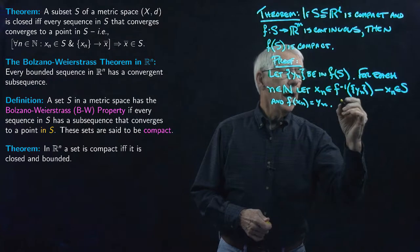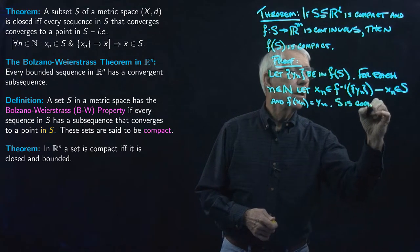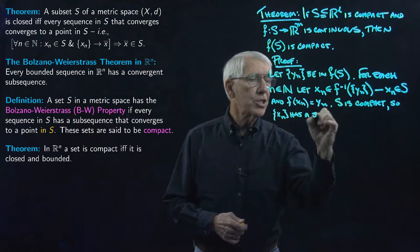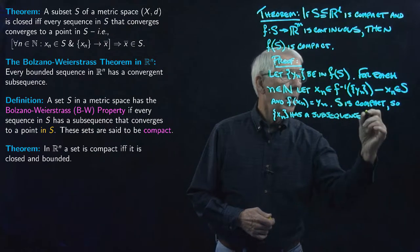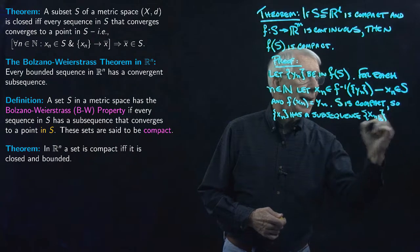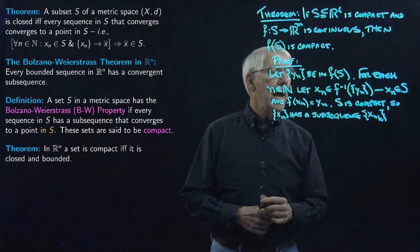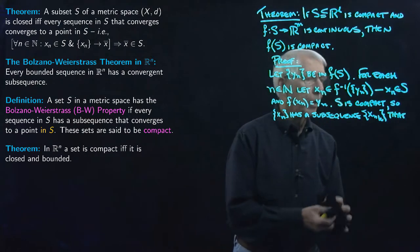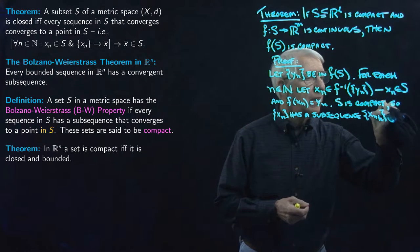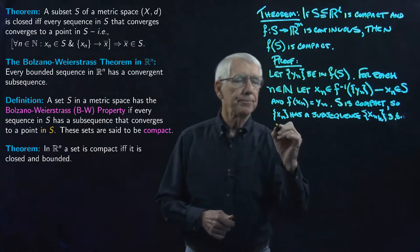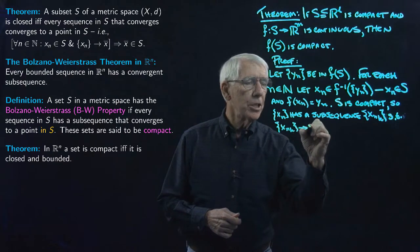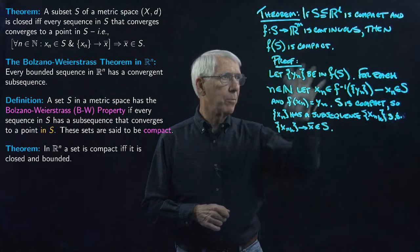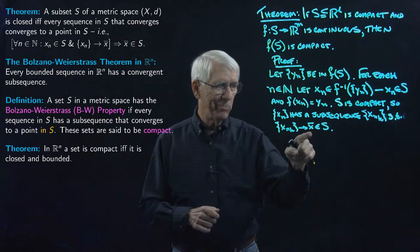Since S is compact, X_N has a subsequence — which of course is entirely in S — such that the subsequence converges to some X-bar in S. We're not saying it converges to an X-bar we already know; the subsequence converges to some point we call X-bar, and it's in S. We know we have a subsequence converging to a point in S because S is compact.